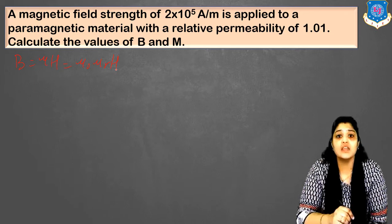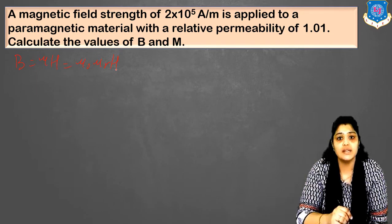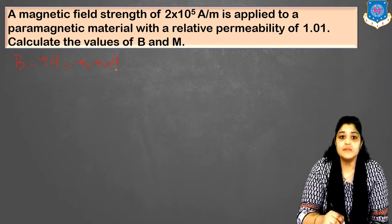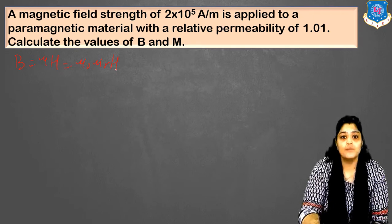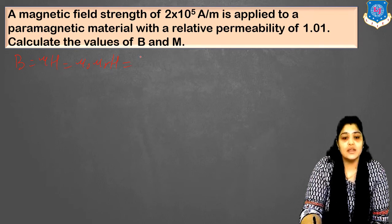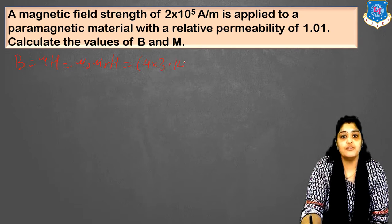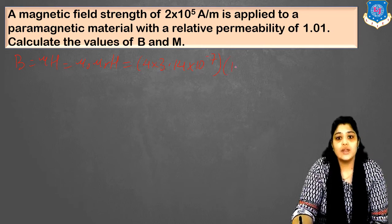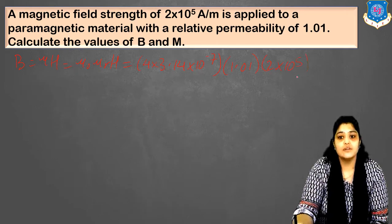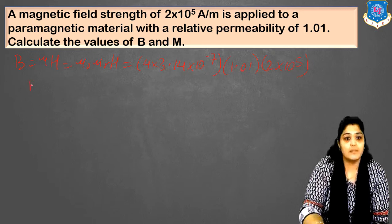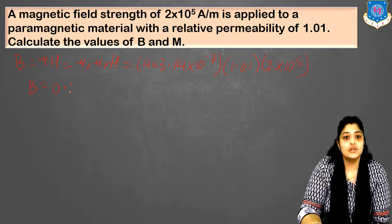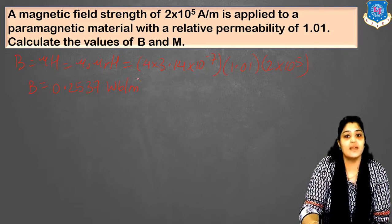We start with B equals mu_0 mu_r H, because I have been given the value of relative permeability and we already know the value of absolute permeability. Substituting: B equals 4 into 3.14 into 10 raised to minus 7, multiplied by 1.01, multiplied by 2 into 10 raised to 5. This gives B as 0.2537 Weber per meter square.